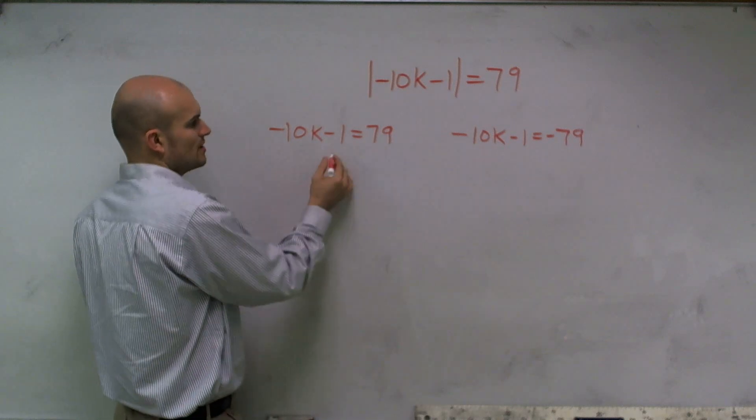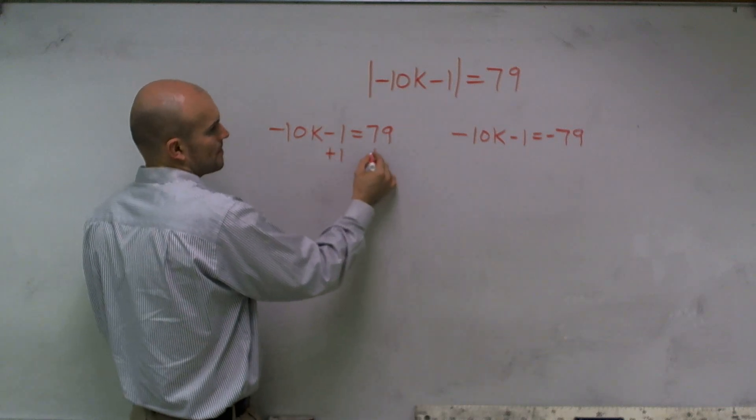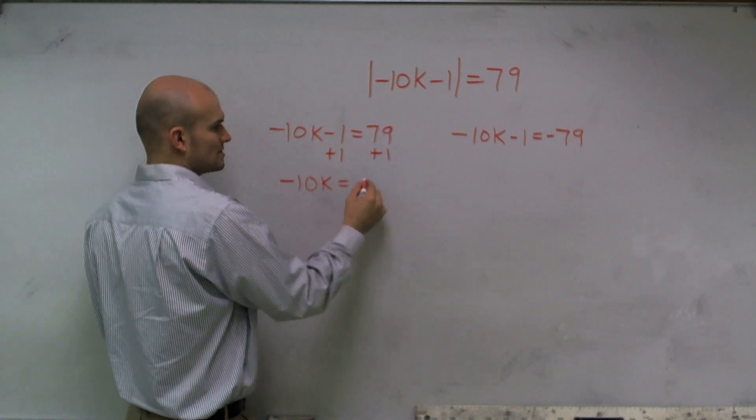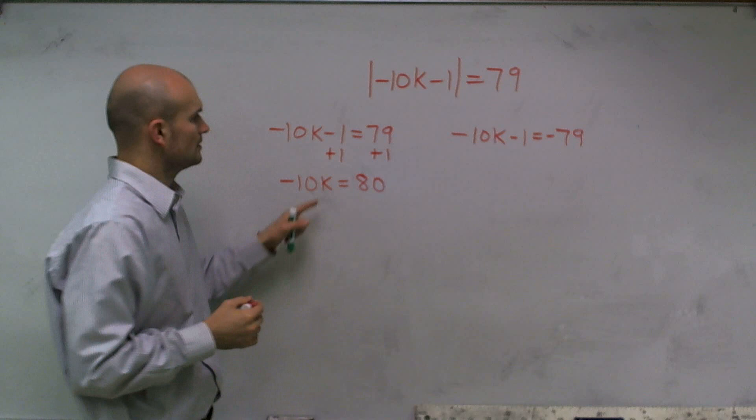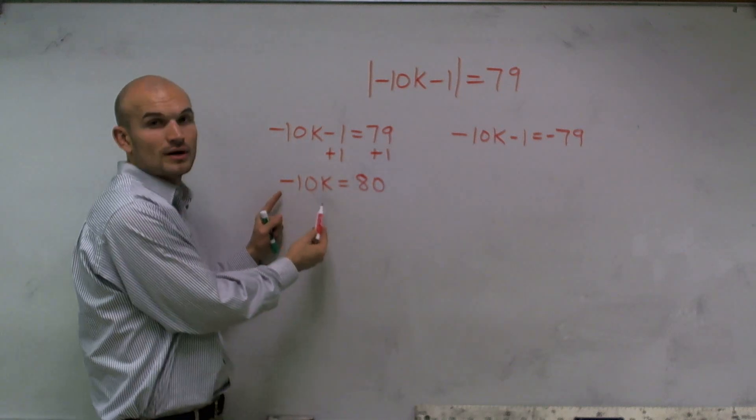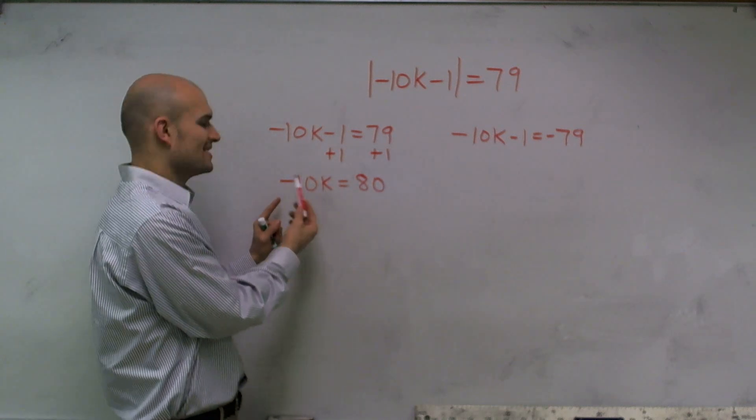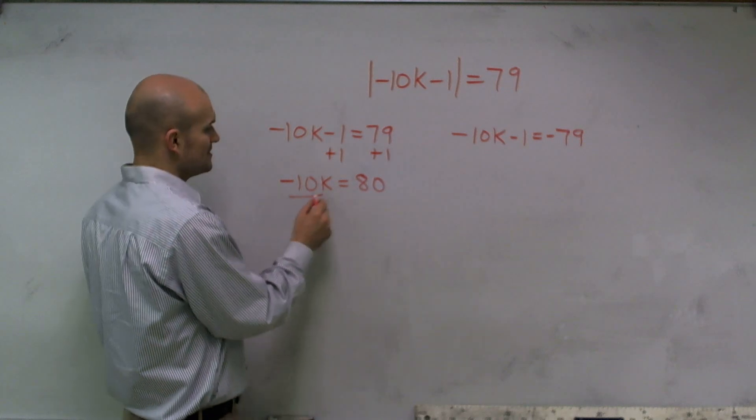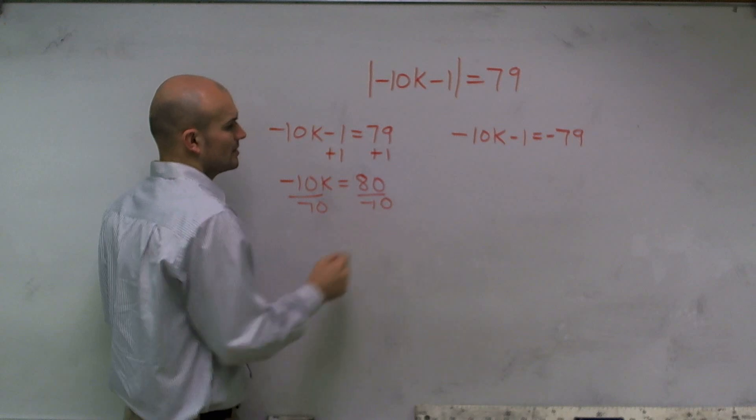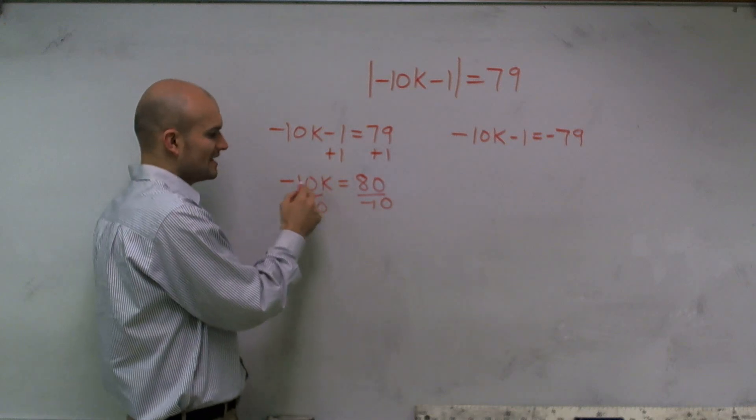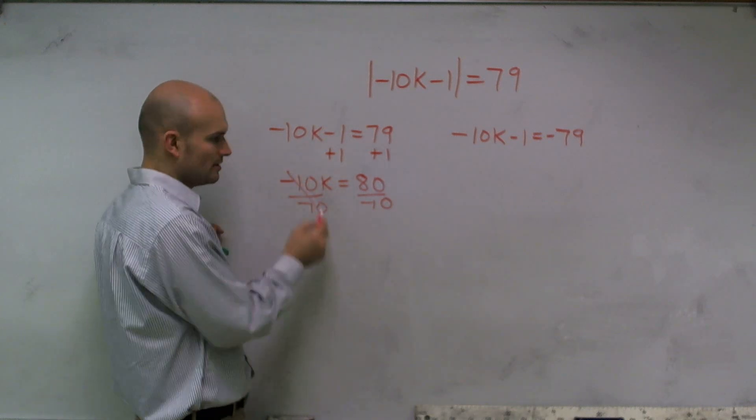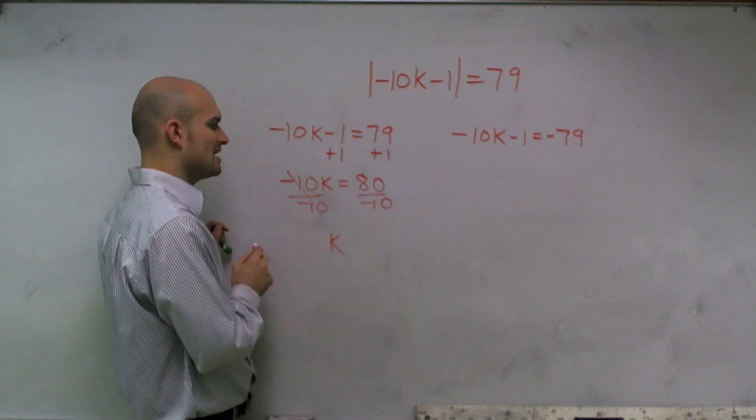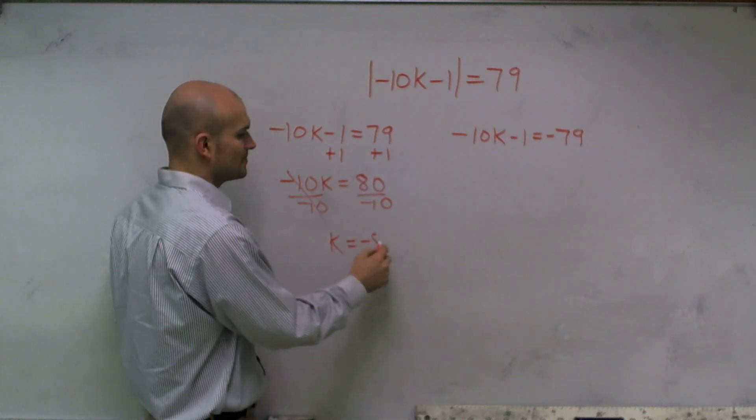So on this first part, I'm going to add one. Therefore, I have negative 10k equals 80. Now I need to undo multiplication of k by negative 10 and divide negative 10 on both sides. When I divide negative 10 divided by 10, that cancels out to 1, and 1 times k just leaves me with k. 80 divided by negative 10 is going to give me negative 8.